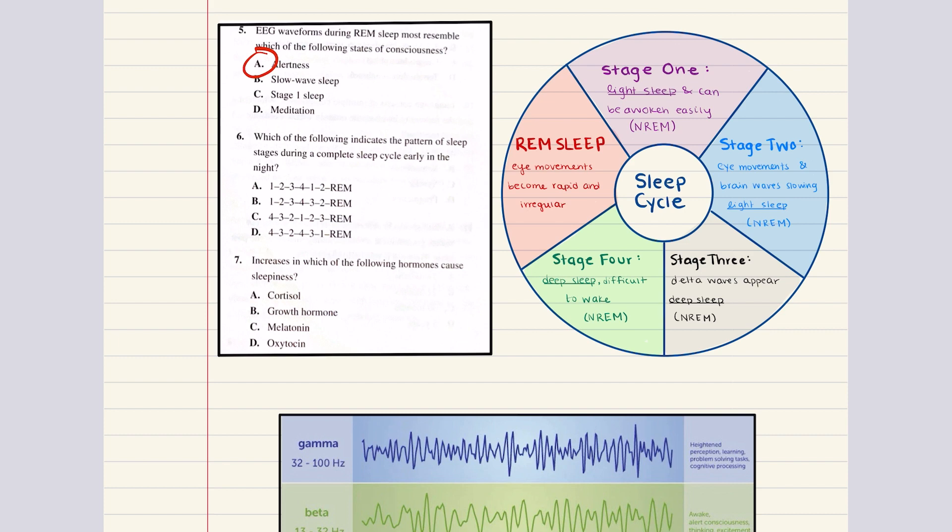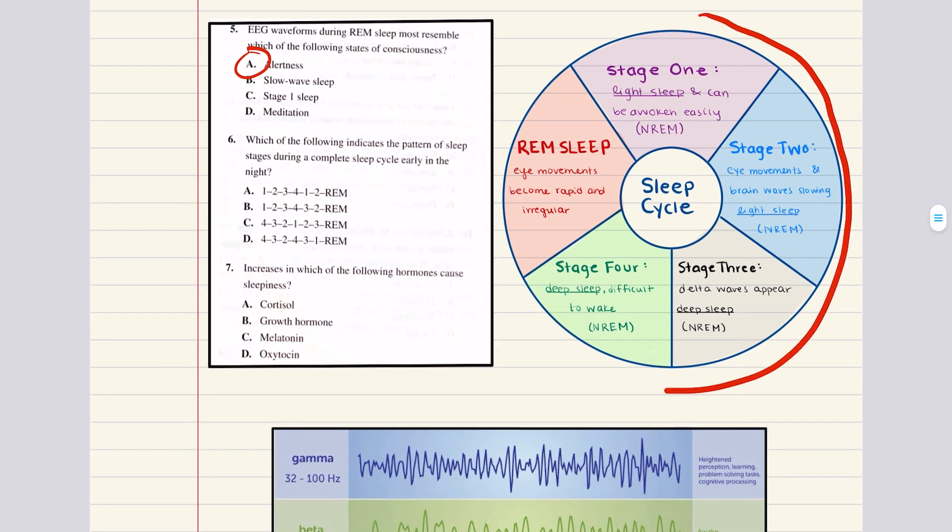Six says which of the following indicates the pattern of sleep stages during a complete sleep cycle early in the night. Sleep cycles include deepening of sleep, so you're going to go through stages one, two, three, and four. Then it can be followed by lightening of sleep, so you can go four, three, two. Or you can go directly into REM, or you can go one, two, three, four, three, two, and then REM. So you can move in any one of these ways early on in the evening.